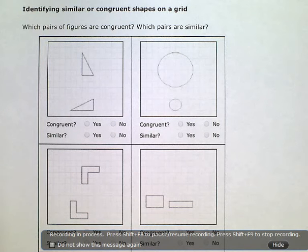Identifying similar or congruent shapes on a grid. Which pairs of figures are congruent and which pairs are similar?